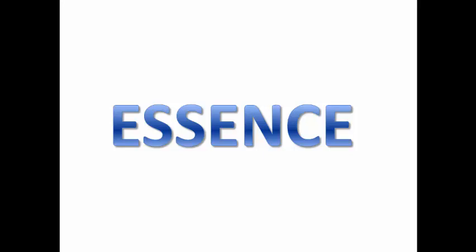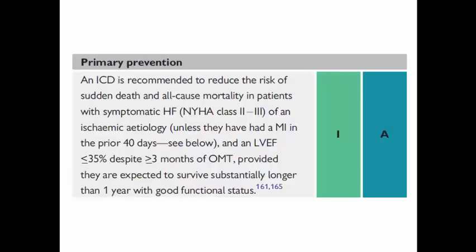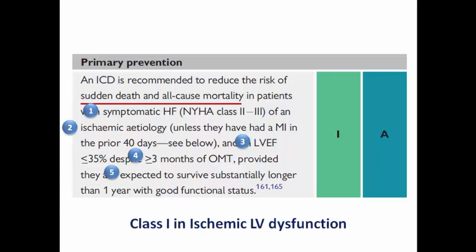From this discussion, what is the net result for primary prevention? ICD has a Class 1 recommendation to reduce the risk of sudden death and all-cause mortality in patients with symptomatic heart failure NYHA Class 2 or 3 of ischemic etiology, unless they had an MI in the prior 40 days, with LV ejection fraction ≤35% despite three months of optimized medical treatment, provided they are expected to survive longer than one year with good functional status.